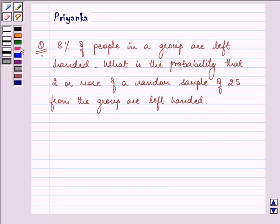Hi and how are you all today? The question says 8% of people in a group are left-handed. What is the probability that 2 or more of a random sample of 25 from the group are left-handed?